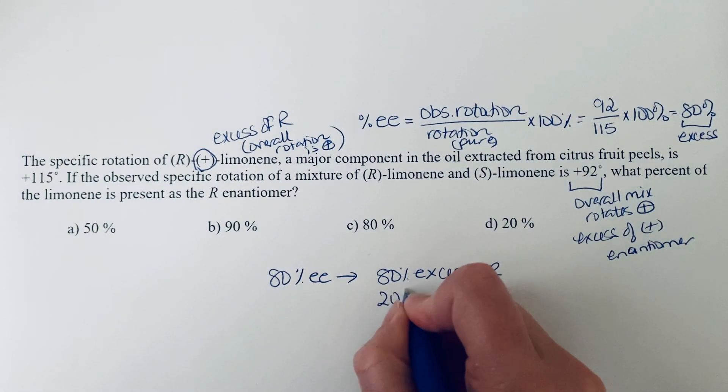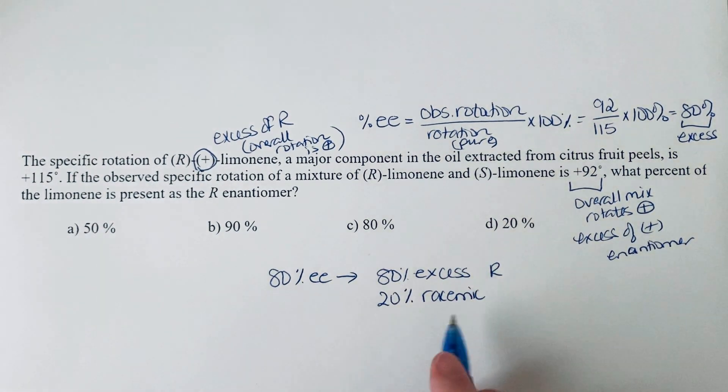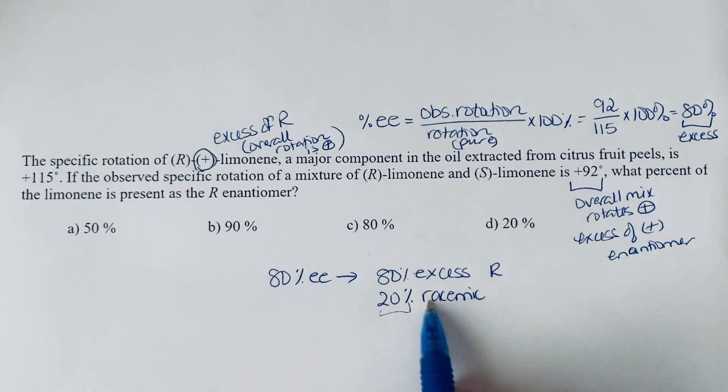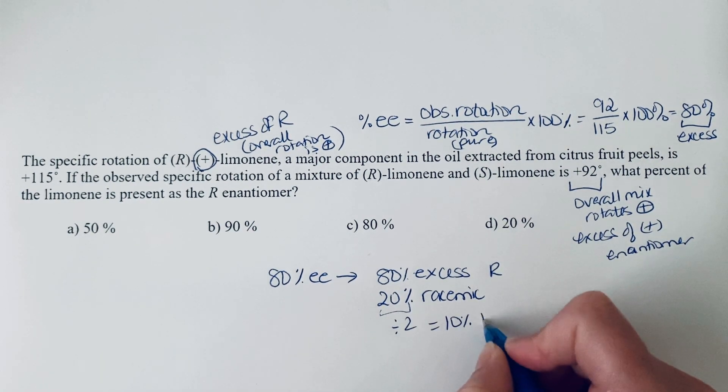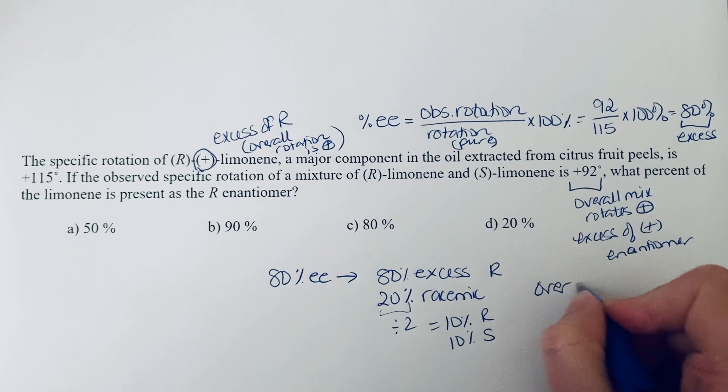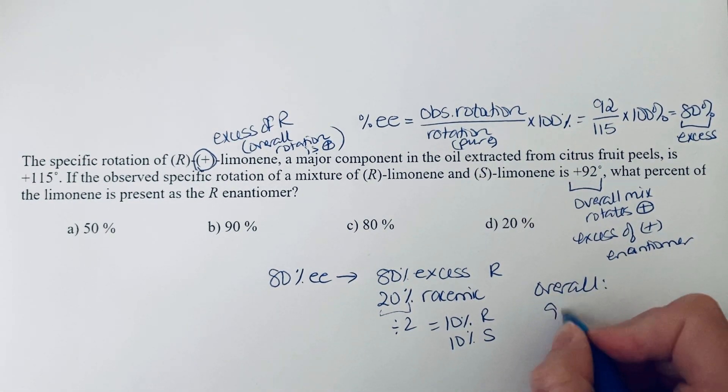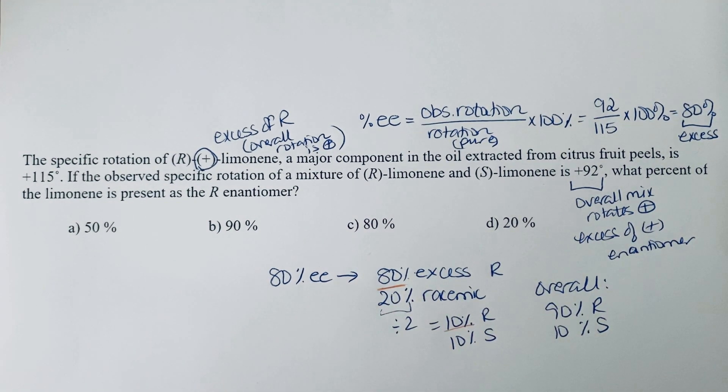And then we have 20% that is racemic, right? Just because we know the total has to be 100%. So of this 20%, if it's racemic, it's a 50-50 mixture. So that means you divide it by two and find out that in there you've got 10% R and 10% S. So overall, this solution is 90% R and 10% S. So to get the 90%, you're adding this and this. And then the S is just that one.